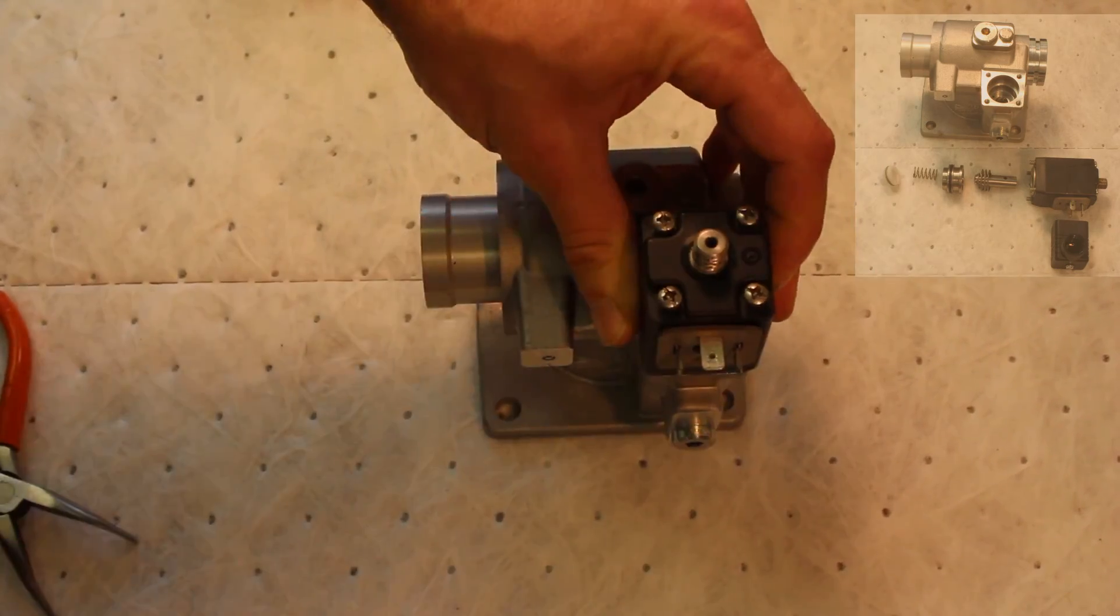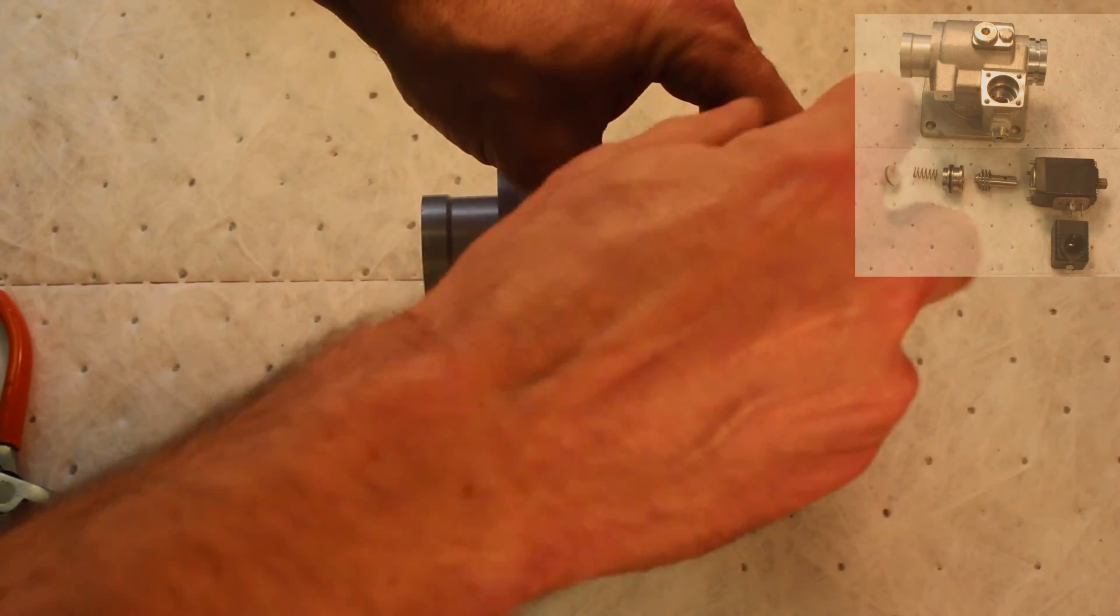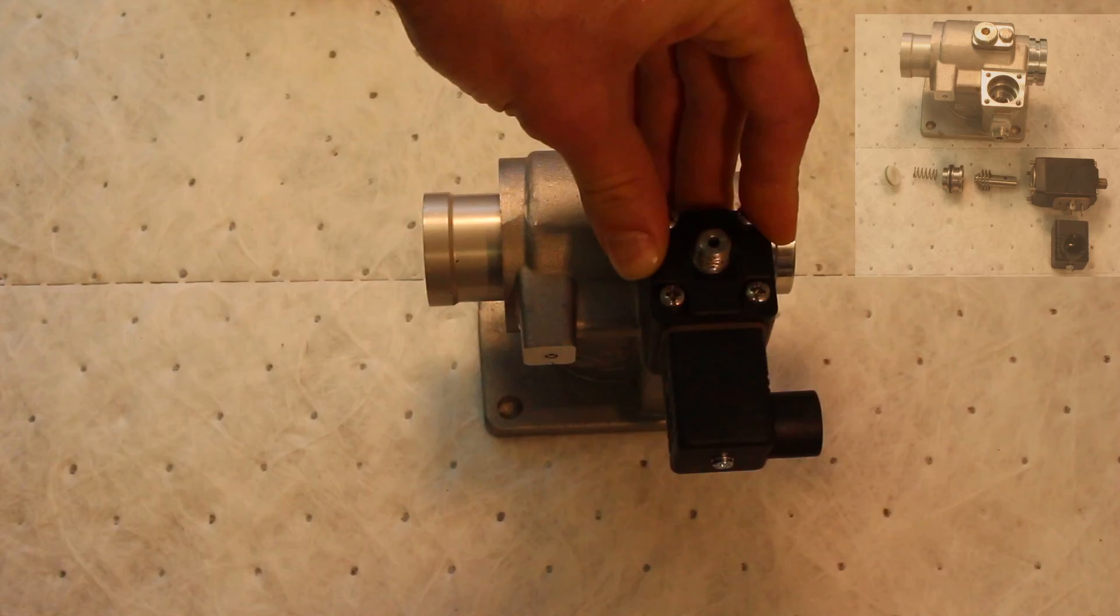Tighten the four bolts that hold the valve together. A moderate amount of tension will do. Too much may strip the threads from the intake valve housing.